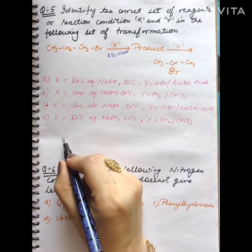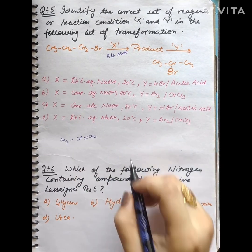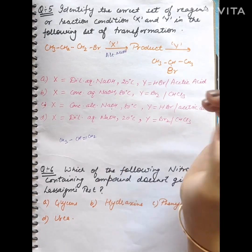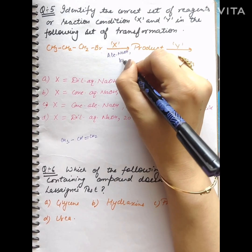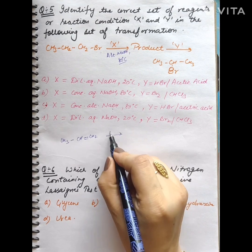but we will also see this. The structure will be CH3-CH=CH2. This will be X, when we took alcoholic NaOH and the temperature is 80 degrees Celsius. Now what will we produce? This means that we are doing HBr addition.